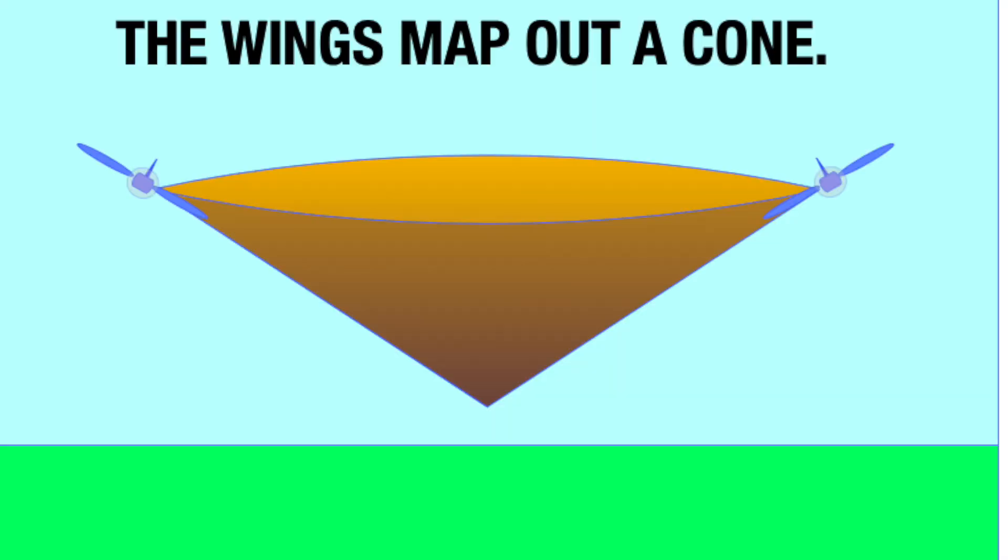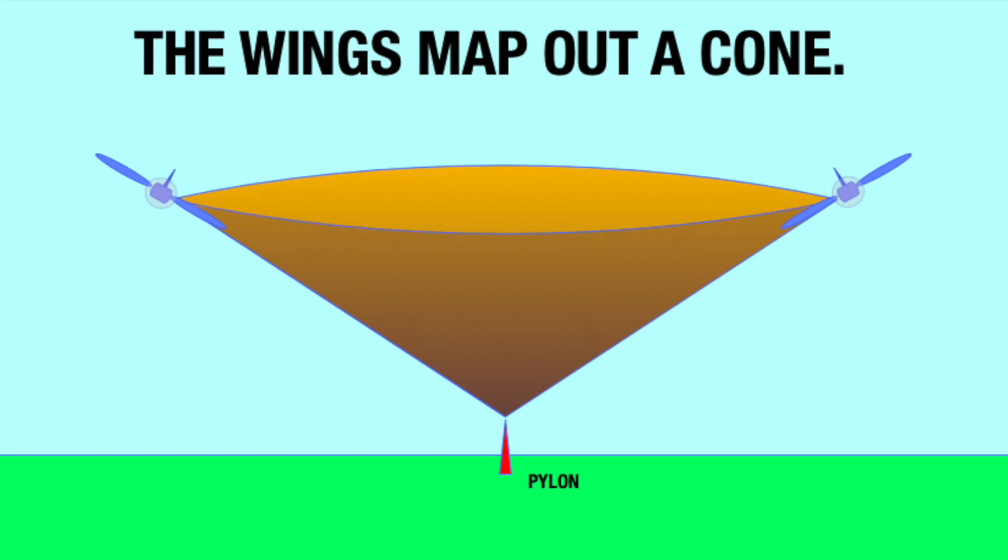An aircraft in a constant bank with coordinated rudder turns in a circle. If you visualize an airplane turning in a circle, note that the wings map out a cone. If there is a pylon at the base of the cone, a pilot can use a feature on the wingtip to create a sight line to the pylon.